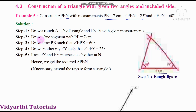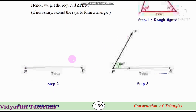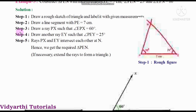After that, Step 2: Draw a line segment PE is equal to 7 cm. They have taken a scale and drawn PE line segment as 7 cm. So, a 7 cm line segment is drawn as a rough figure.